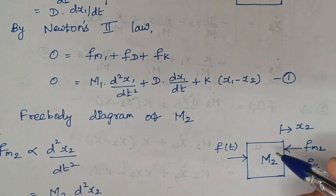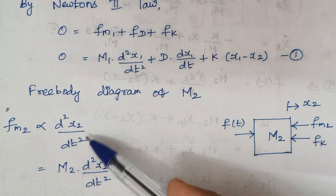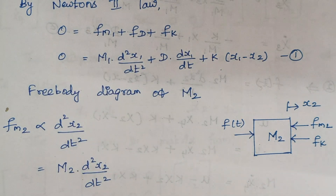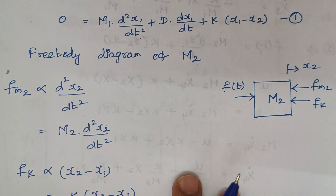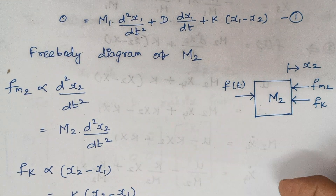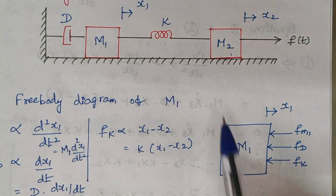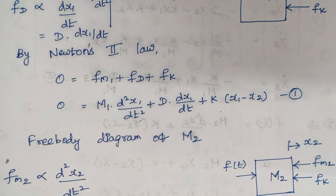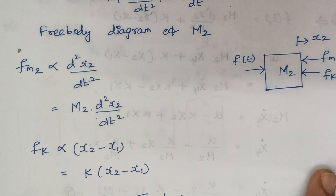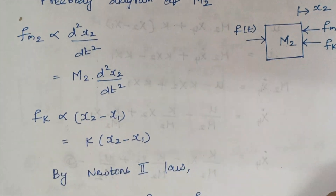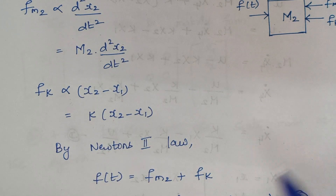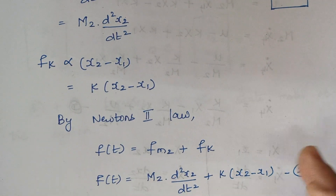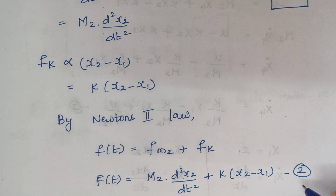While writing the expression, fm2 is directly proportional to d²x2/dt², so the proportionality constant gives m2 × d²x2/dt². Next, fk is directly proportional — since we are considering m2, the displacement x2 should come first, so it is k(x2 − x1). By Newton's law, applied force equals opposing force: f(t) is the applied force and these two are the opposing forces. Substitute the respective values and let this be equation number 2.